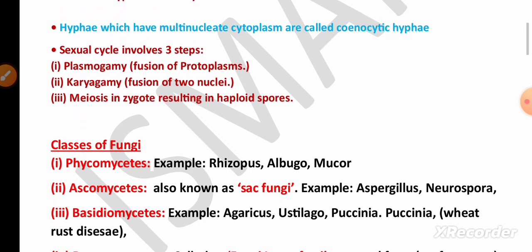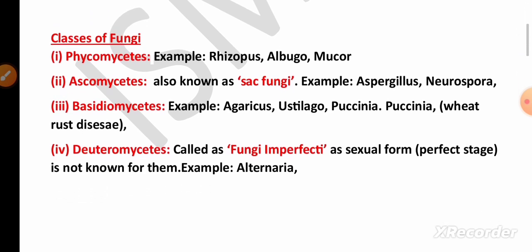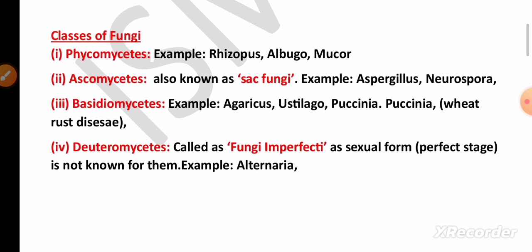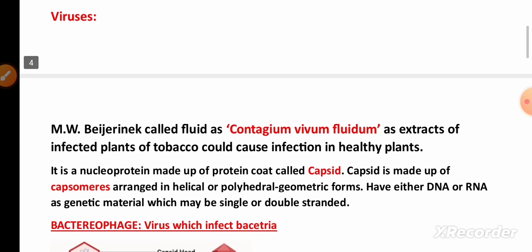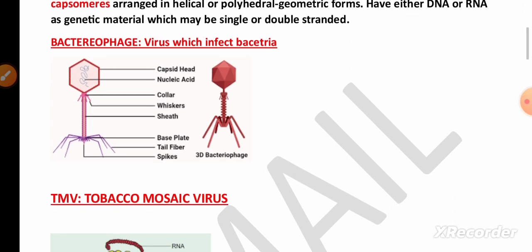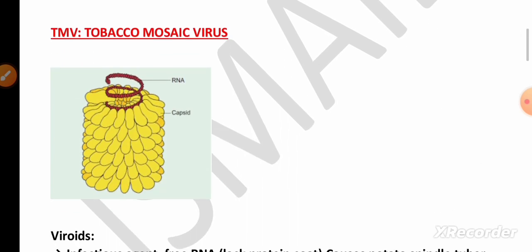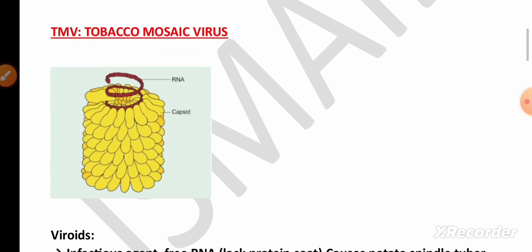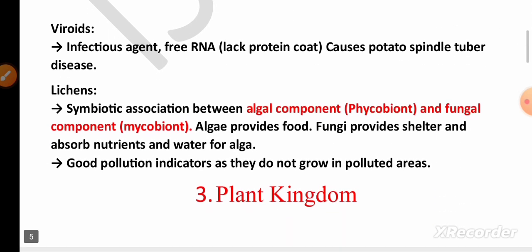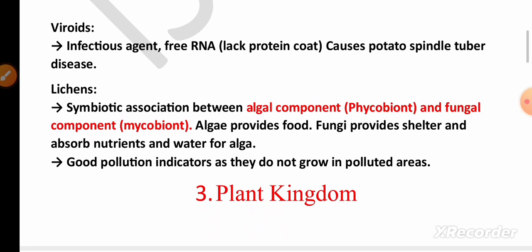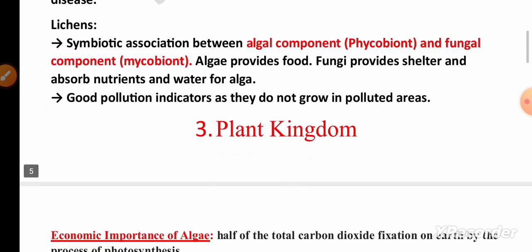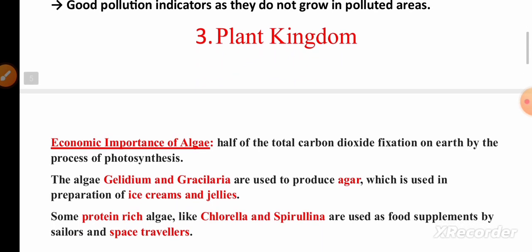In Kingdom Fungi, remember the definitions of hyphae, plasmogamy, and karyogamy, and the classes of fungi — especially Ascomycetes (sac fungi) and Deuteromycetes (fungi imperfecti). Remember the definition of viruses, the diagram of bacteriophage, and tobacco mosaic virus. Also remember viroids and lichens — phycobiont, mycobiont, and the importance of lichens.